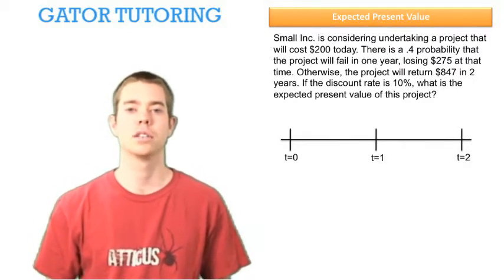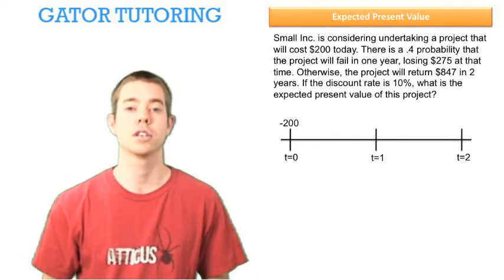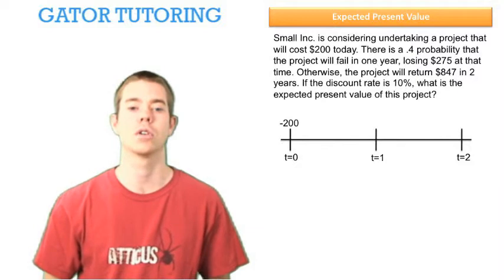We're going to want to draw a timeline to help us organize our thoughts. In time period zero, it's going to cost us $200, so a negative $200 in time period zero.